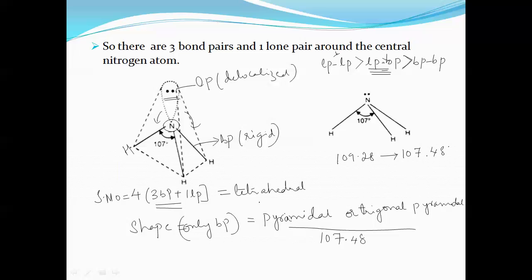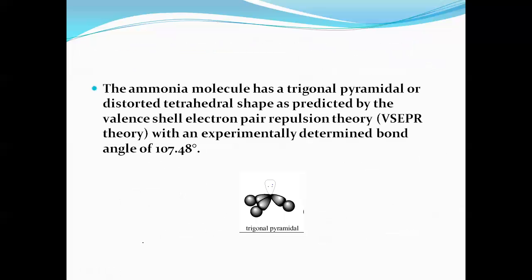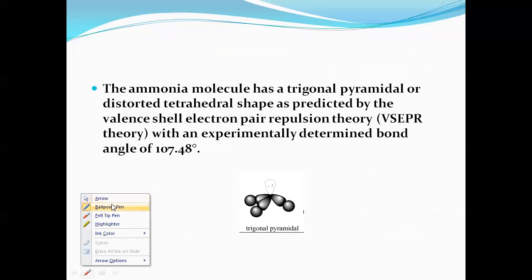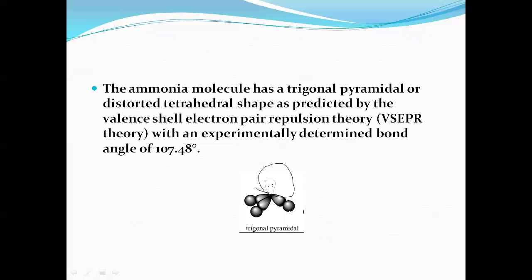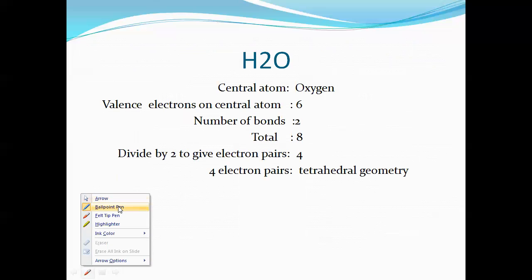According to the VSEPR theory — Valence Shell Electron Pair Repulsion theory — there is a repulsion between lone pairs and bond pairs of electrons. As a result, the shape is pyramidal or trigonal pyramidal. If the steric number is 4, the geometry is always tetrahedral, but the shape depends on the presence of lone pair electrons on the central atom. This is the main application of the VSEPR theory.